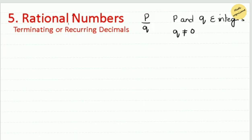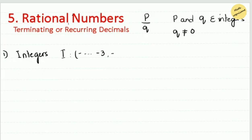You need to remember the most important point: all fractions are rational numbers, but not all rational numbers are fractions. Rational numbers can also be integers or decimals. When considering decimals, it should always be a terminating decimal or a recurring decimal. We will see examples of each type.